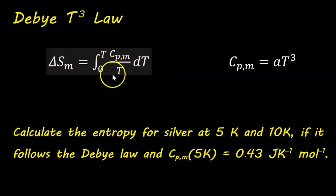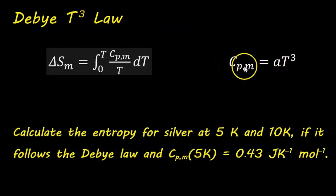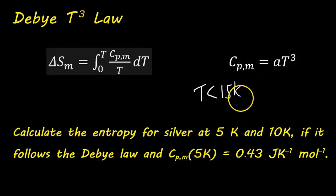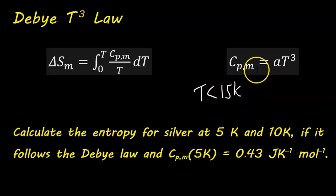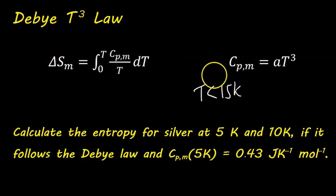This is our equation for molar entropy — we've seen this many times in this series. The Debye Law, or T³ Law, or Debye extrapolation, states that the heat capacity of a substance is equal to a constant times temperature cubed. This is valid for temperatures up to a maximum of 15 Kelvin. There's a lot of theory on this law, but we're simply going to calculate the molar entropy.